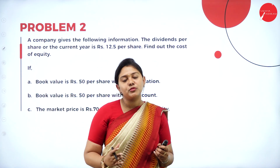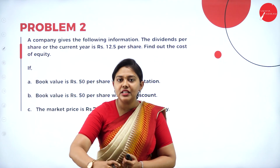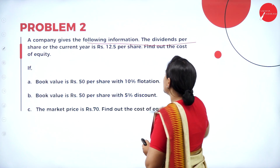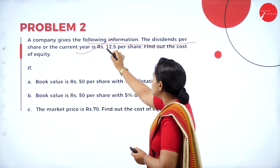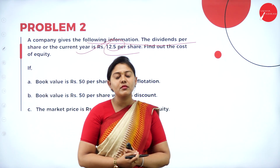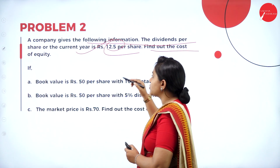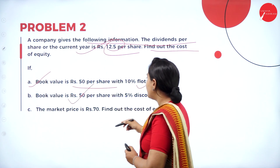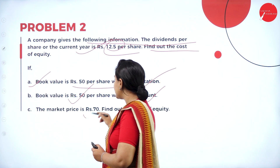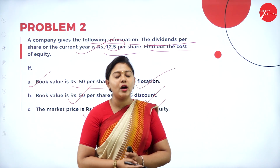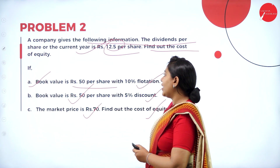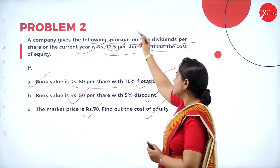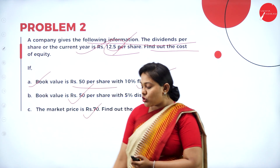So stay tuned for the next class. Until then, let us learn the calculation of cost of equity. A company gives the following information: the dividend per share for the current year is rupees 12.5. Find the cost of equity if: (a) book value is rupees 50 per share with 10% flotation cost; (b) book value rupees 50 per share with 5% discount; and (c) market price is rupees 70. Three calculations are needed. Dividend remains the same for all.